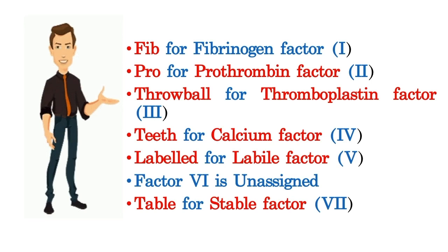Throwball is the clue for thromboplastin, the third factor. Teeth contains calcium, so the clue for the calcium factor — the fourth factor — is teeth. Labeled is the clue for labile factor, the fifth one.